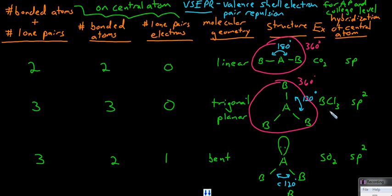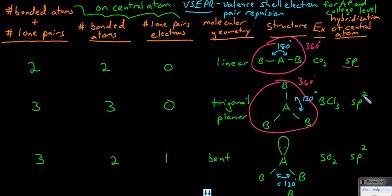The molecular geometry having three things around the central atom is SP2. Please note that in the previous case where there were two things around the central atom, there were two letters: S and P. In this case where there are three things around the central atom, it's SPP — three letters, or SP2.